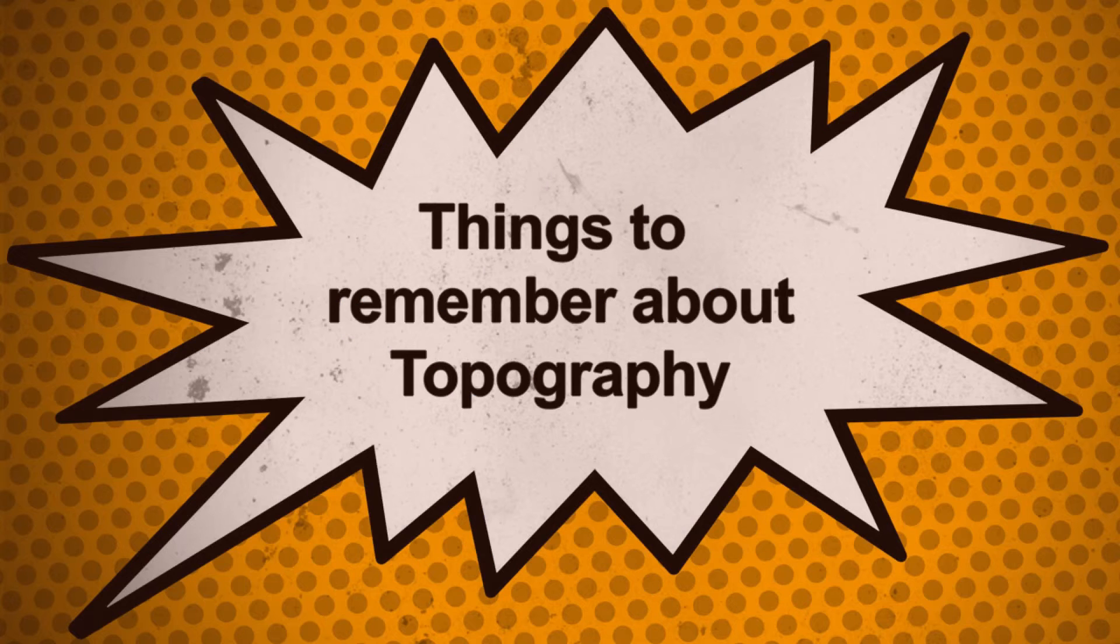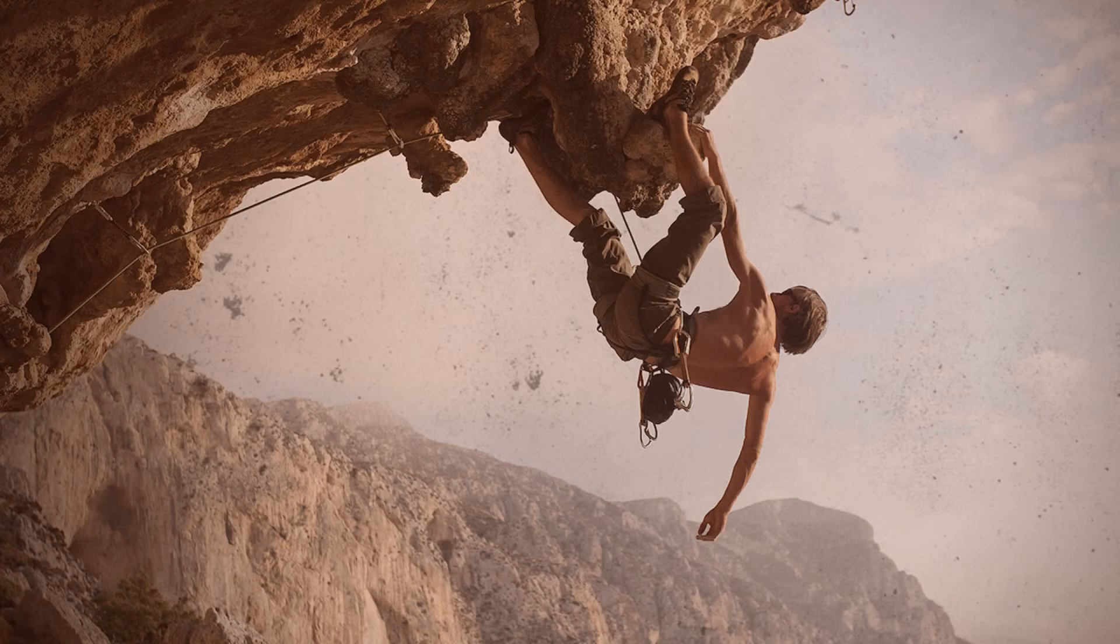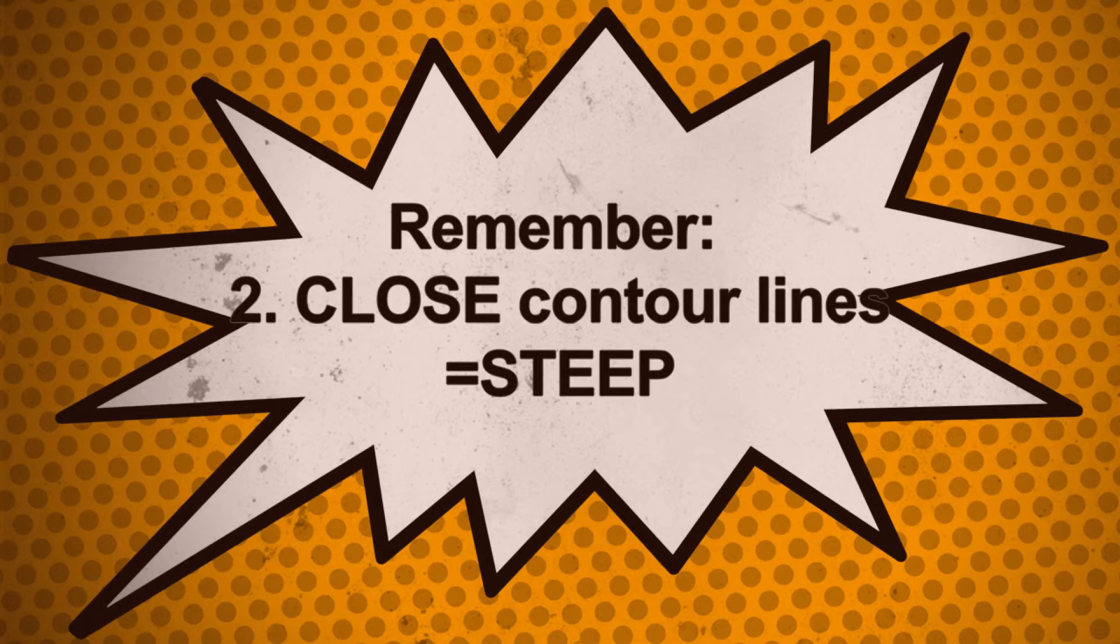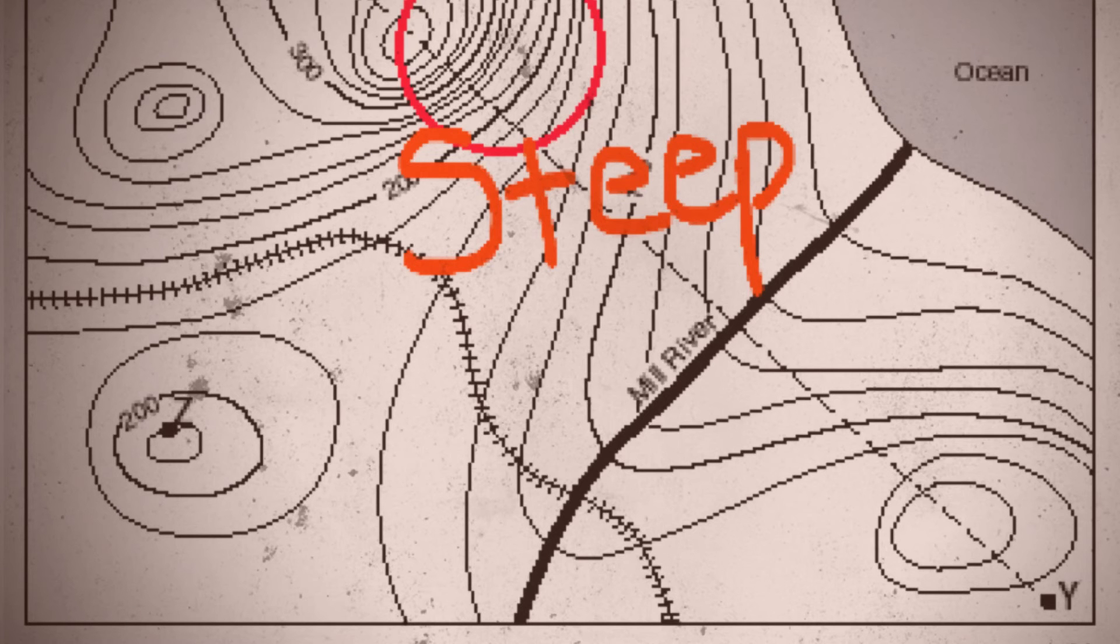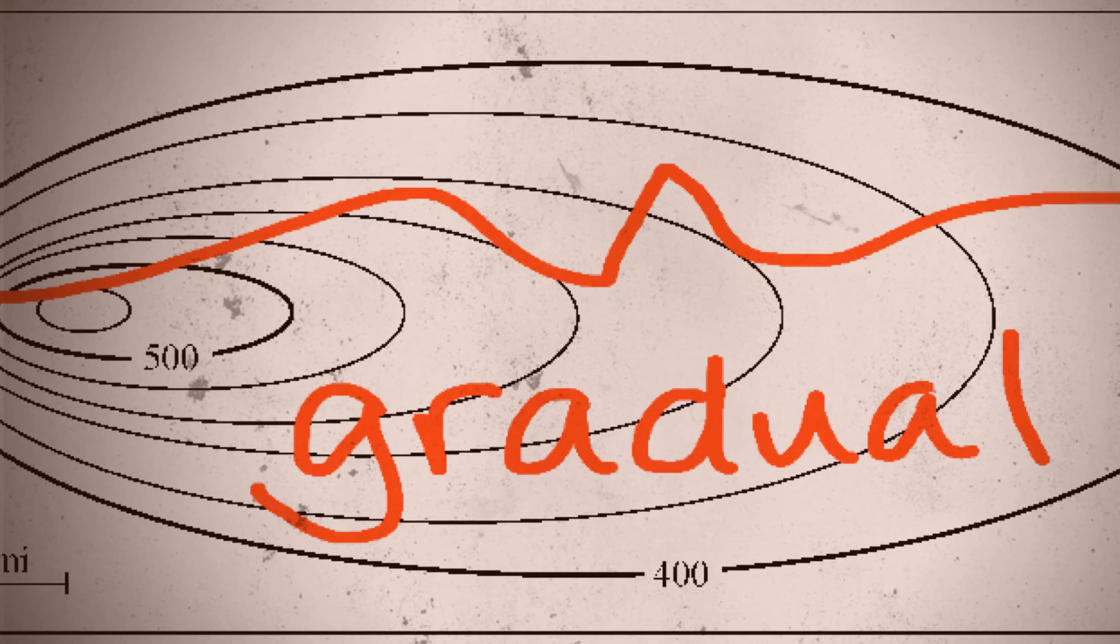Here are some things to remember about topography. First, contour lines don't cross. If they did, you'd be in some crazy world where you were in two places at once, or very uncomfortable at the very least. Second, contour lines can be extremely close together to represent a very steep area, or the contour lines can be spread out representing a more gradual, gentle, sloping area.